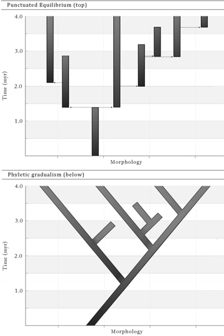The fossil record includes well-documented examples of both phyletic gradualism and punctuational evolution. As such, much debate persists over the prominence of stasis in the fossil record. Before punctuated equilibrium, most evolutionists considered stasis to be rare or unimportant. The paleontologist George Gaylord Simpson, for example, believed that phyletic gradual evolution comprised 90% of evolution. More modern studies, including a meta-analysis examining 58 published studies on speciation patterns in the fossil record, showed that 71% of species exhibited stasis, and 63% were associated with punctuated patterns of evolutionary change.